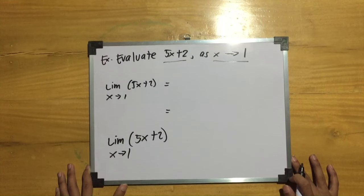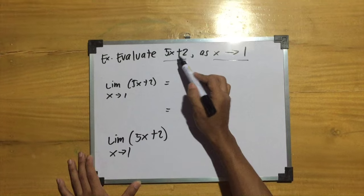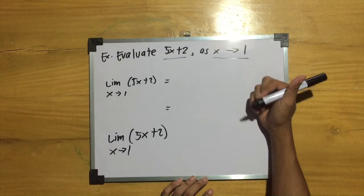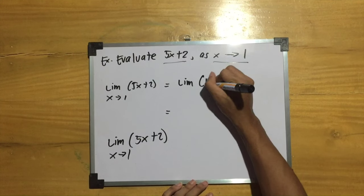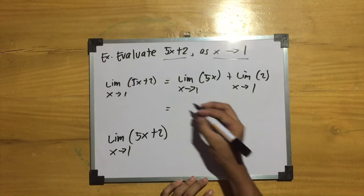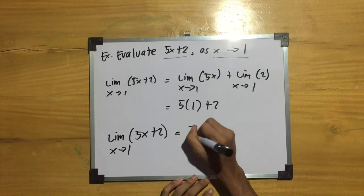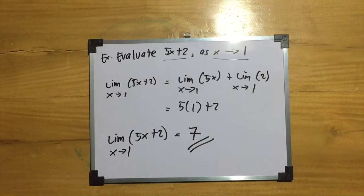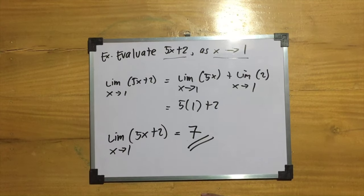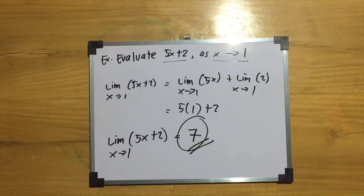So how do we find the value of a limit? We find limits by plugging in the x values. For example, evaluate the limit of 5x plus 2 as x approaches 1. The limit of 5x plus 2 as x approaches 1 equals the limit of 5x as x approaches 1 plus the limit of 2 as x approaches 1, which is 5 times 1 plus 2 equals 7. We simply plug in the value x approaches, and that's how we get the answer 7.